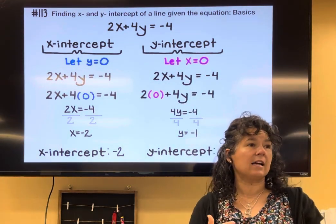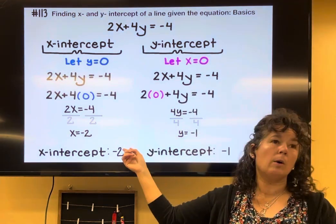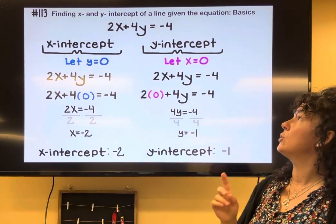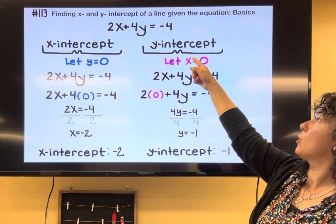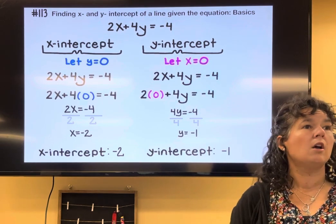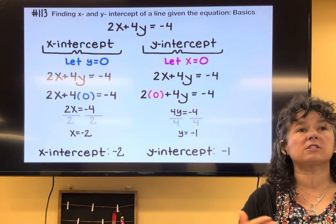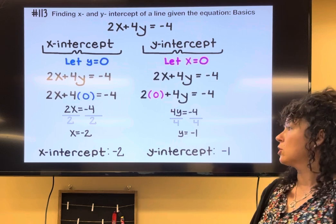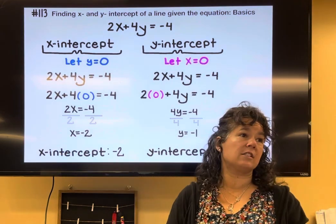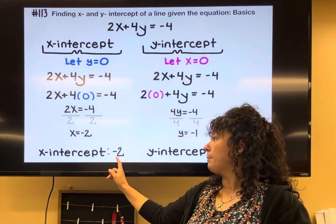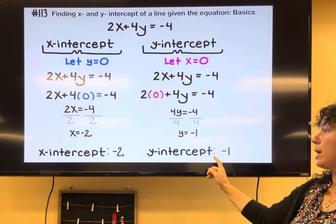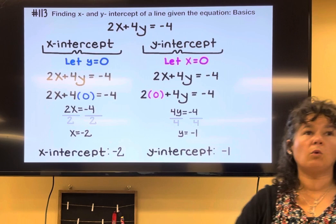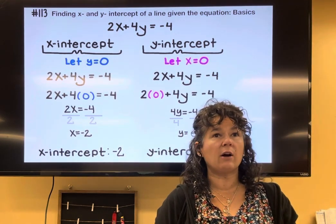The very next lesson is a follow-up on this one. It says to graph the line, a line like 2x plus 4y equals negative 4, by first finding the x and y-intercepts. So if I wanted to take this and now graph the line, I'd put a point on the x-axis at negative 2. I'd put a point on the y-axis at negative 1, connect the dots, and now it's graphed.